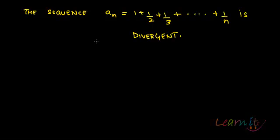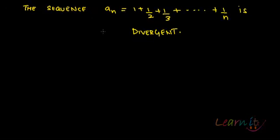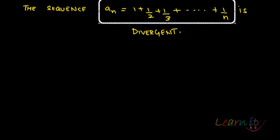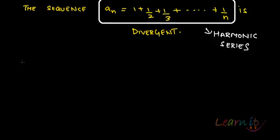The sequence of partial sums 1 + 1/2 + 1/3 + ... + 1/n is divergent — it is not convergent. We have seen how it is divergent by using the criteria for convergence previously. This sequence of partial sums is essentially a harmonic series, which is never convergent. Now let us use the Cauchy criteria to find out why it is divergent.